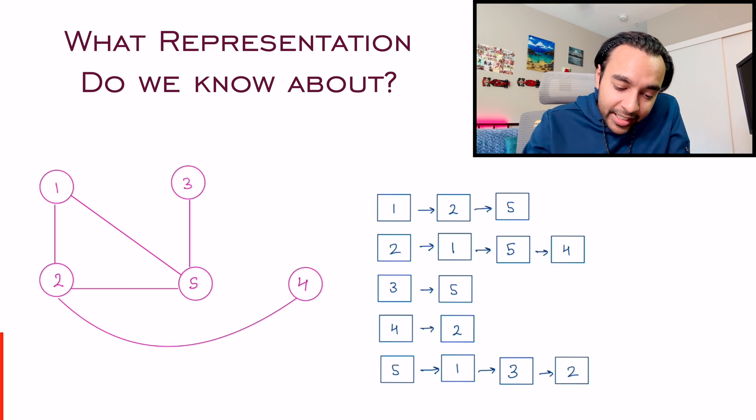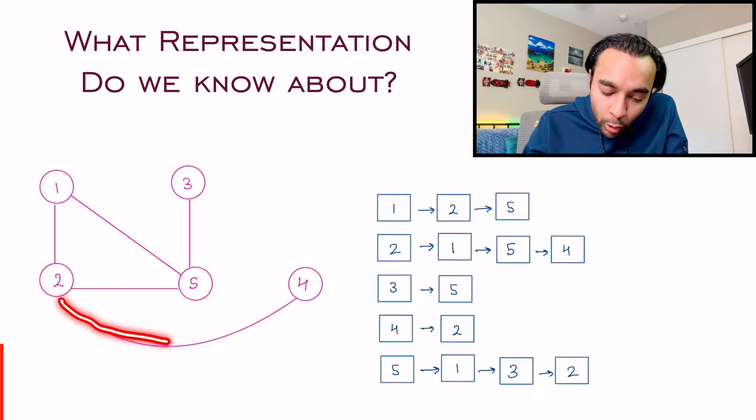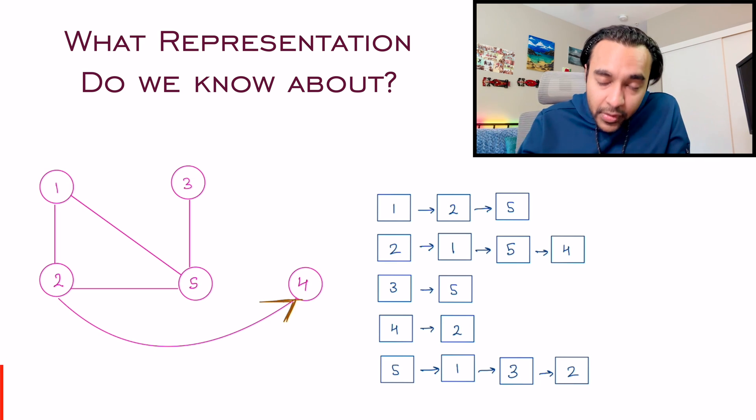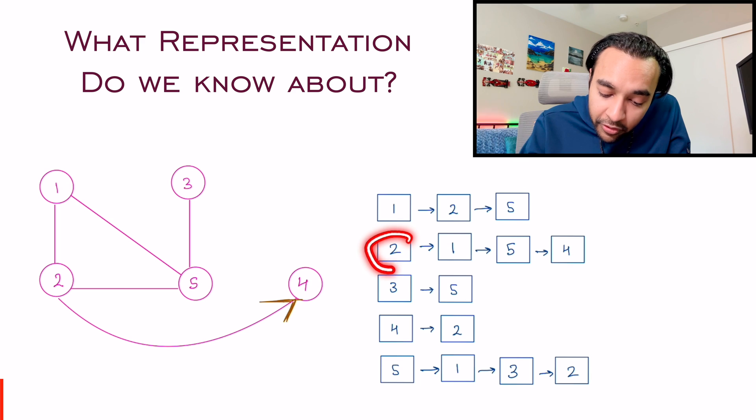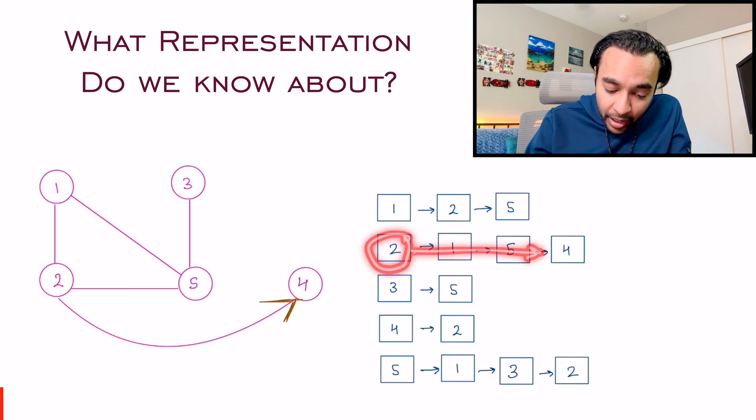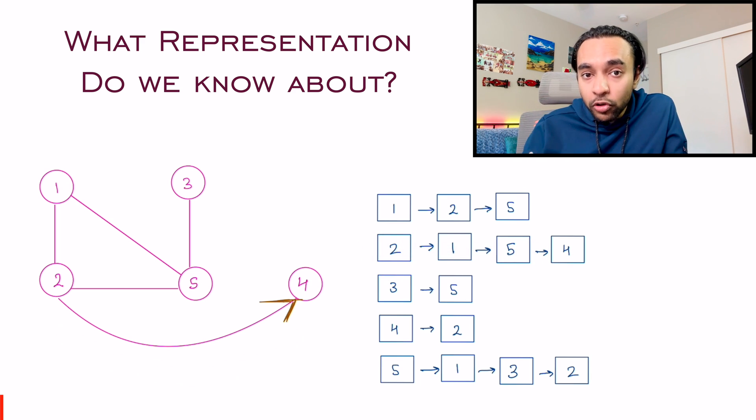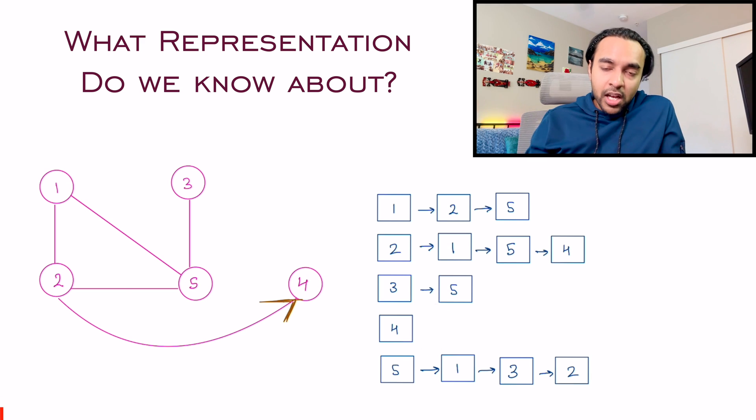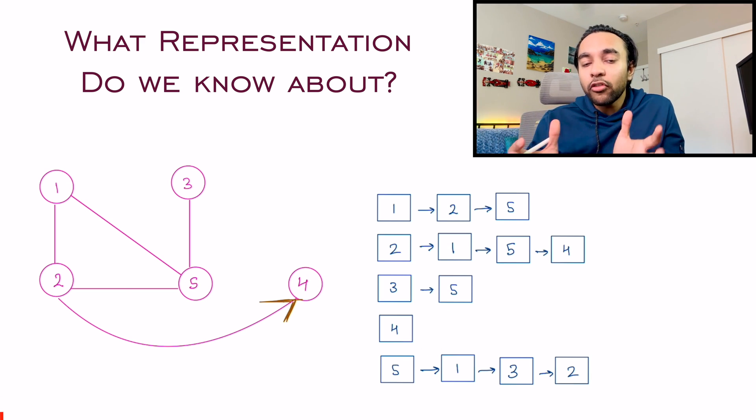For example, let us say this edge between node two and node four becomes a directed edge. So what will this do? There is still a connection between node two to node four, but there is no connection between node four and node two. So this will now go away. So this is how you are taking care of all the operations.